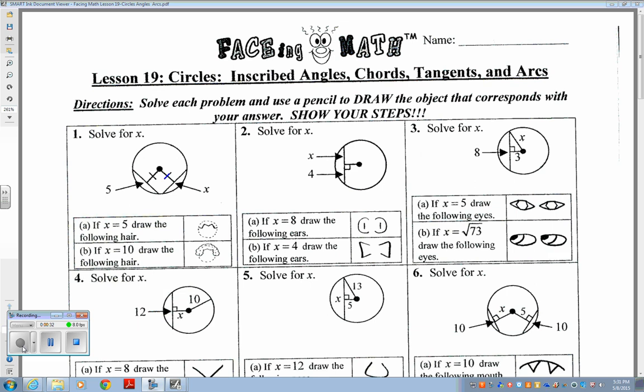Like for example, on number one, they're showing you here with the tick marks that your two chords are equal distance from the center. And if they're ever equal distance from the center, I'm going to show you equal distance, then they're going to be congruent. The chords are going to be congruent. So basically it's just trying to show you the x value. So x would have to be 5, which was A. And so this is what you're going to draw on your face, that type of hair.